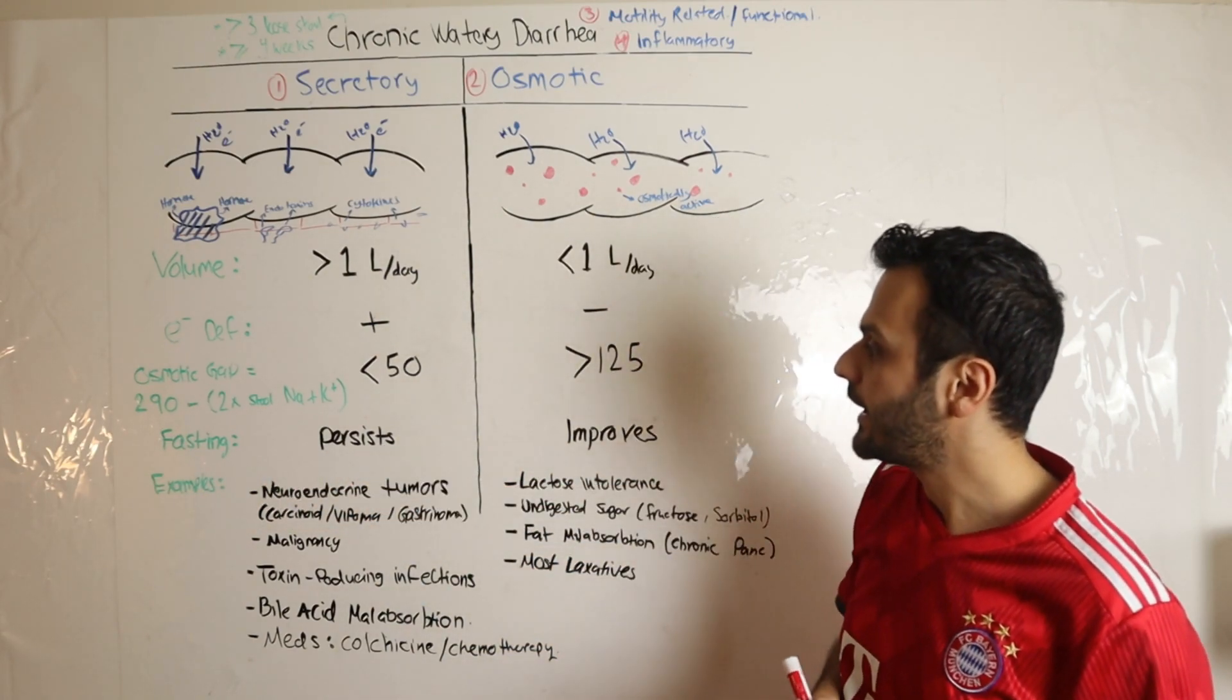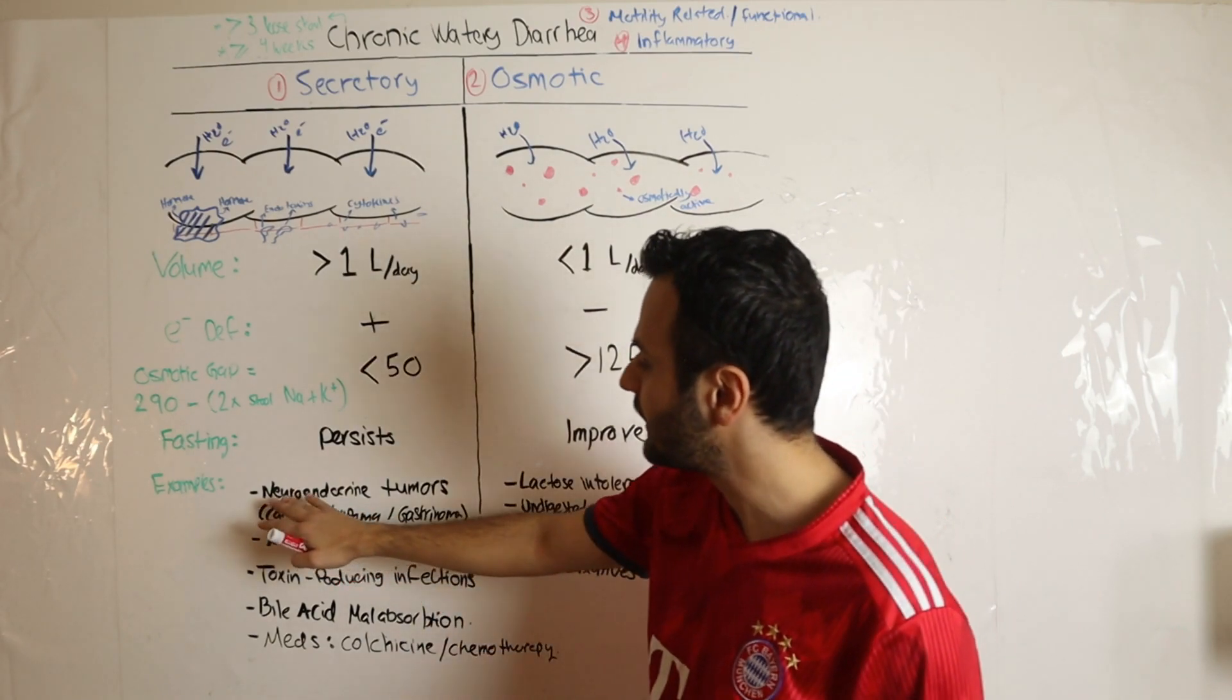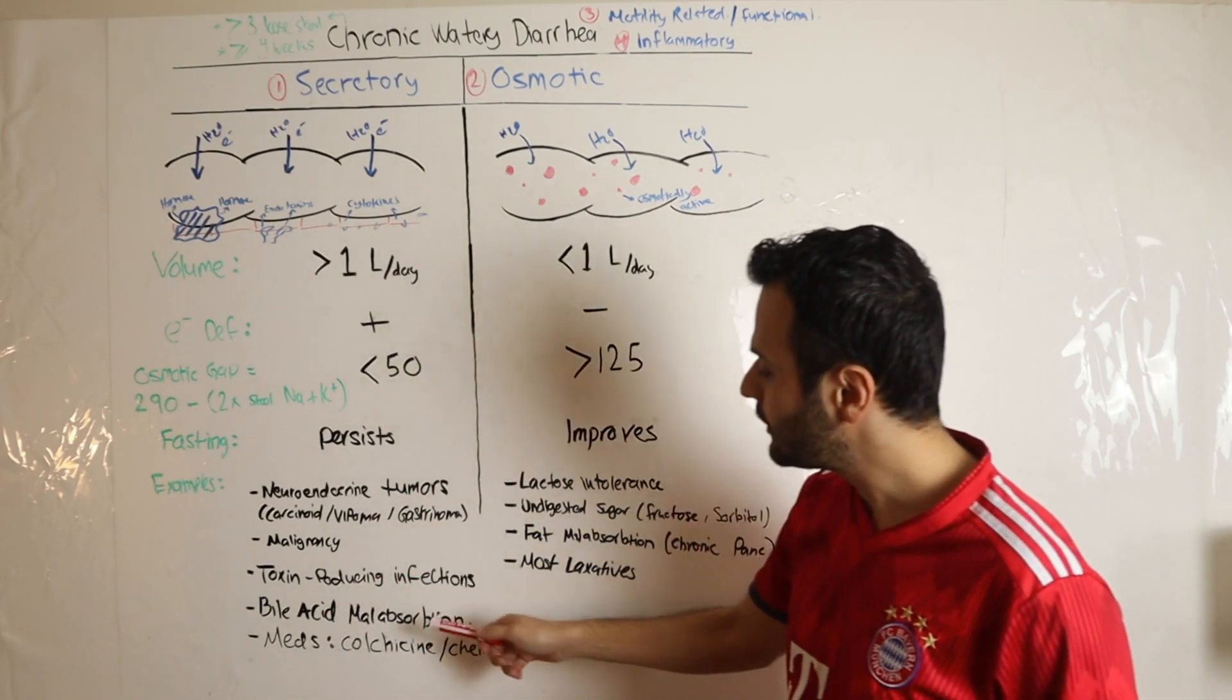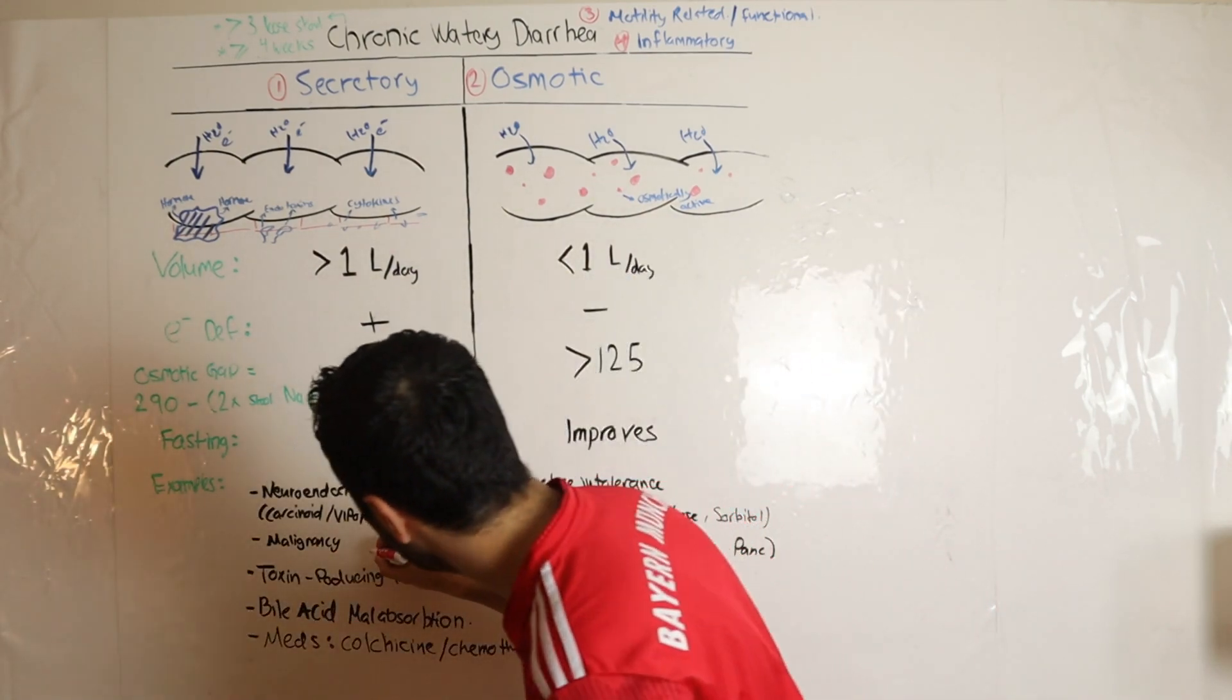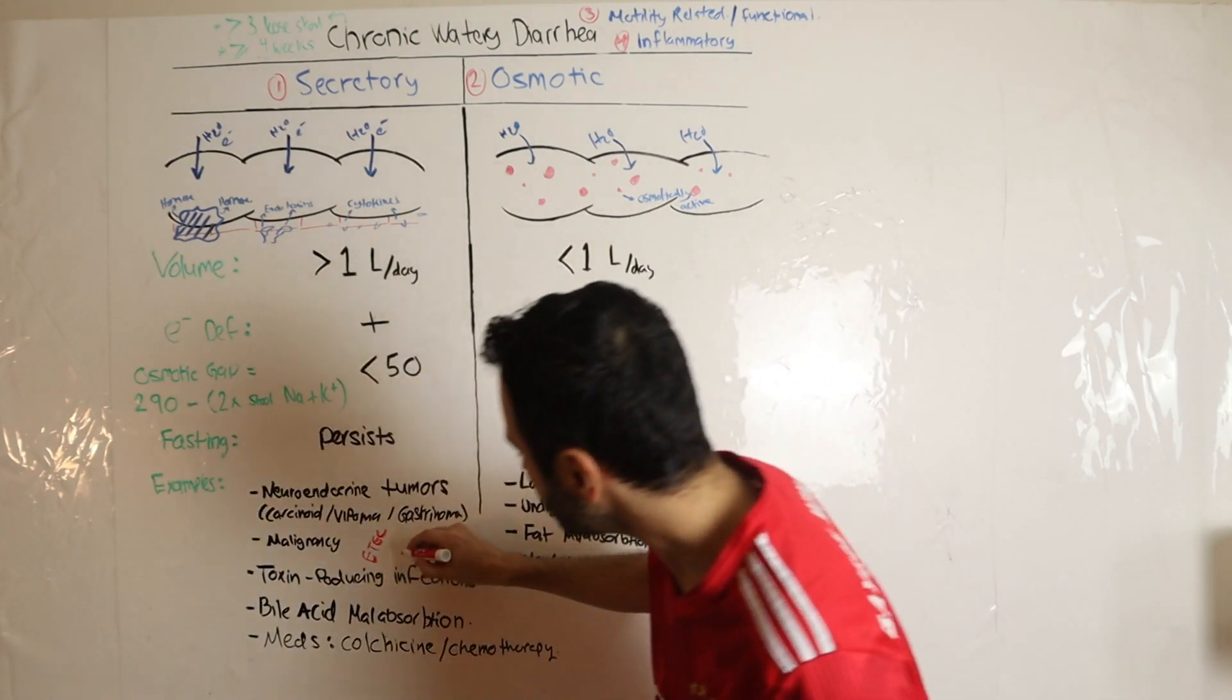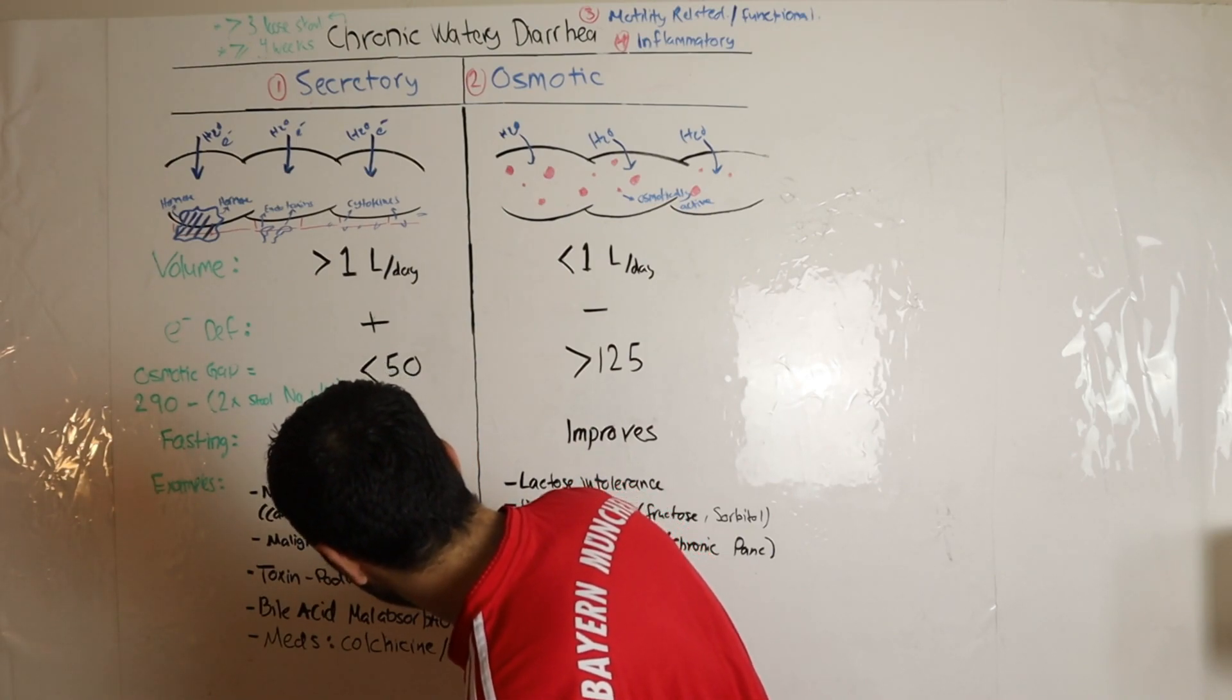Examples of secretory diarrhea include neuroendocrine tumors such as carcinoid, VIPoma, gastrinoma, and certain malignancies. Toxin-producing infections are common, and the board examination often asks about enterotoxigenic E. coli (ETEC), a common cause of travelers' diarrhea. They could also ask about patients from developing countries – these patients tend to have cholera.